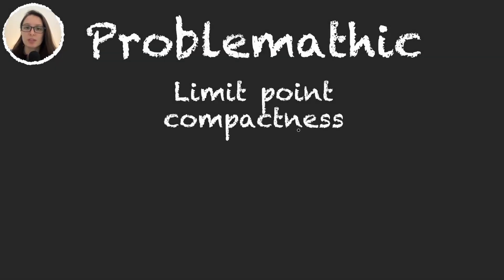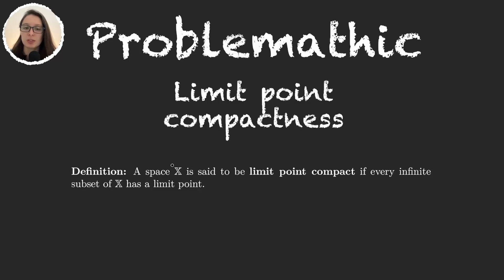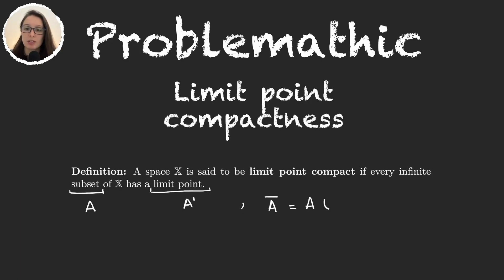In this video we are going to learn the definition and two results about limit point compactness. We say that a topological space X is limit point compact if every infinite subset of X has a limit point. Remember that if the subset is called A, then the limit points are called A', and we knew that the closure of a set was equal to A union its limit points.